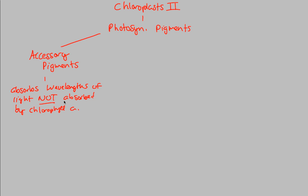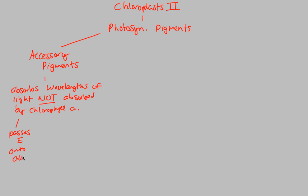Chlorophyll A has this incredible ability to absorb a decent range of wavelengths. But what these accessory pigments do is pick up anything that Chlorophyll A can't pick up well. Because light is presented in many different wavelengths, and Chlorophyll A only captures a certain specific type. Accessory pigments come in and pick up the ones Chlorophyll A can't absorb, and then pass that energy onto the actual Chlorophyll A pigment.